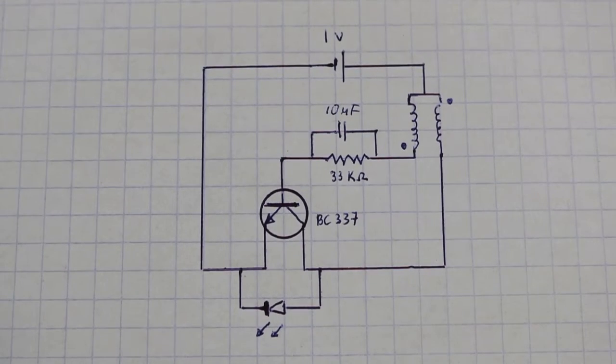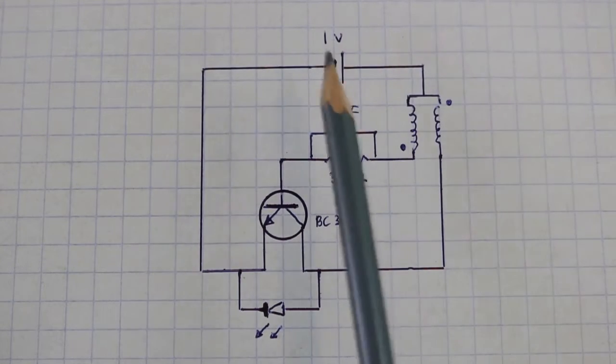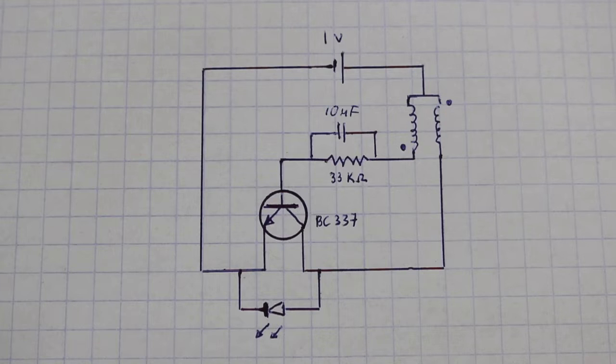Here you can see the circuit. It works with a drained battery which gives around 1 volt, but the circuit works from 0.6 volts and above.